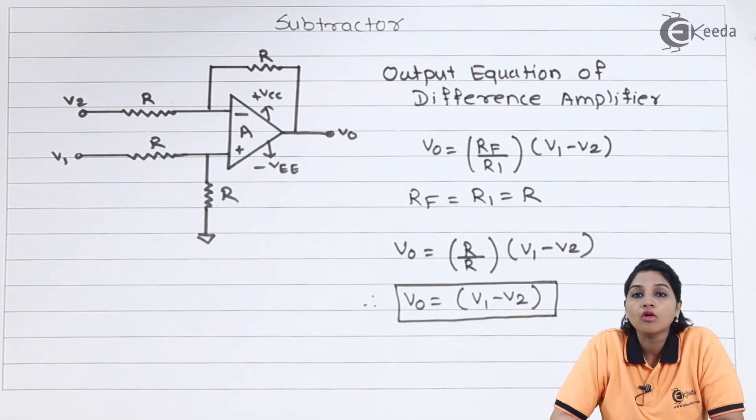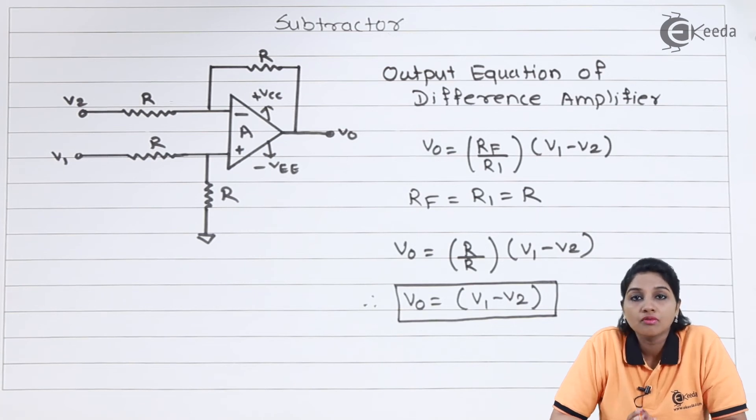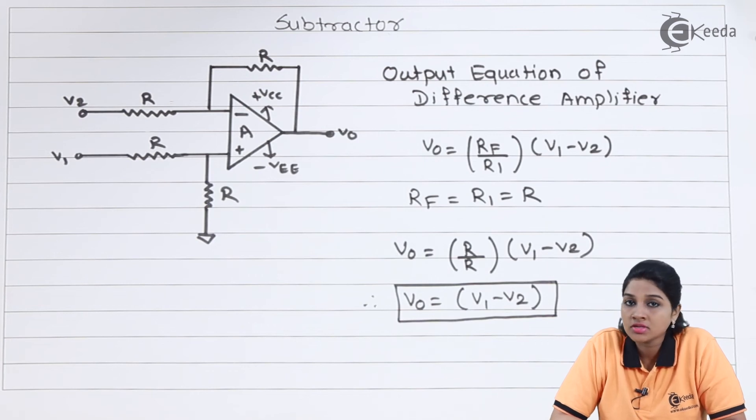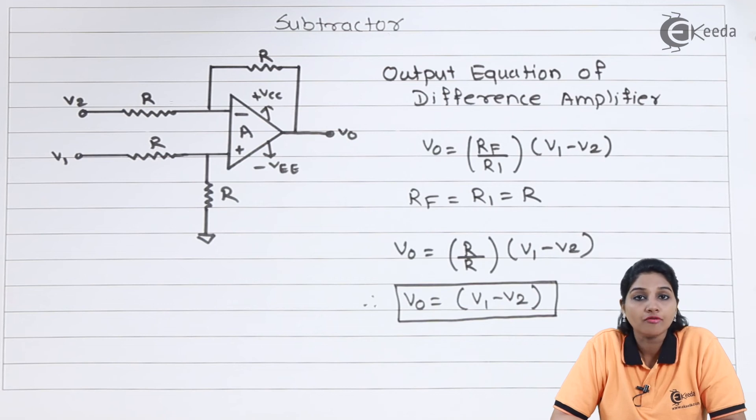So this is how we can obtain output equation, which is nothing but the difference between the signals applied to inverting and non-inverting terminal of the op-amp. When value of resistors used in the circuit are same, then the circuit of difference amplifier gets converted into a circuit called subtractor.